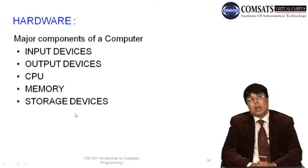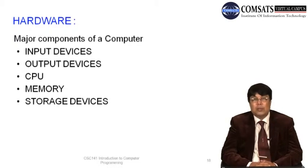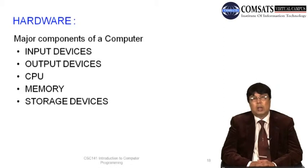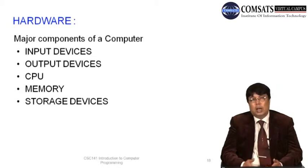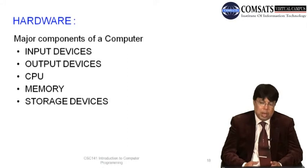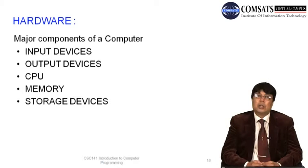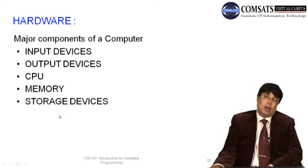Hardware may be characterized into different categories: input devices, output devices, CPU, memory, and storage devices. Some books describe three categories — peripheral devices (input, output, storage), CPU, and memory. Either way, these are the five physical components constituting the hardware of the computer.